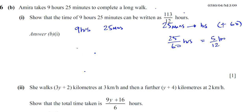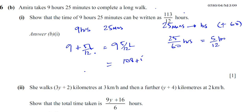So we have 9 hours plus 5 over 12 hours, which is 9 and 5 twelfths of an hour. We can change it into an improper fraction: 12 times 9 is 108, so we have 108 plus 5 over 12, which gives us 113 over 12. Simple as that.